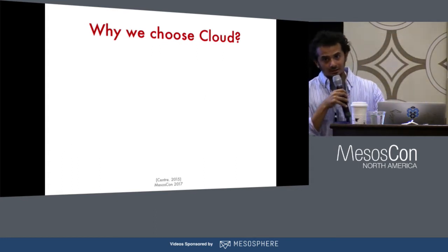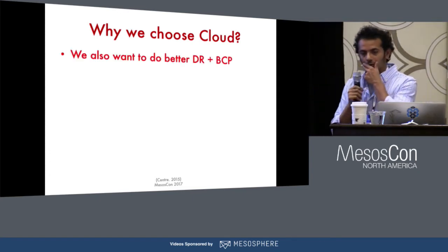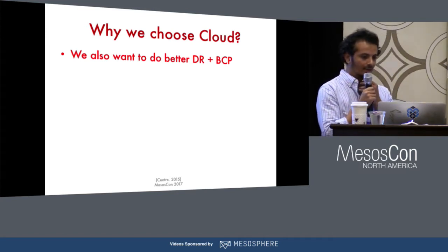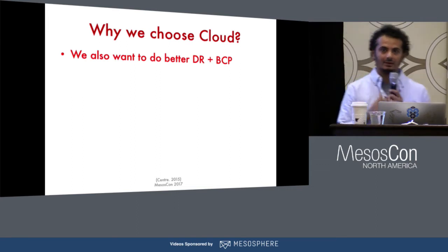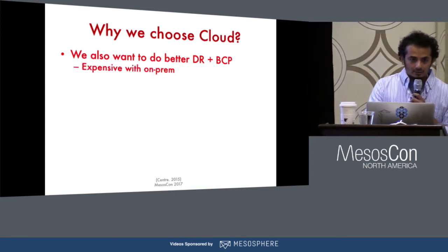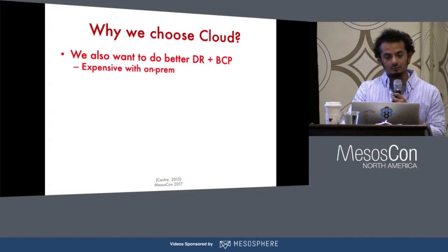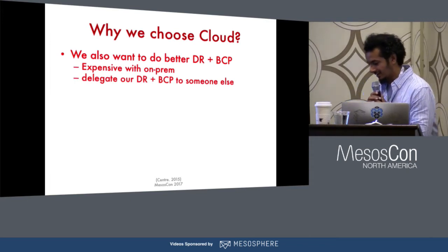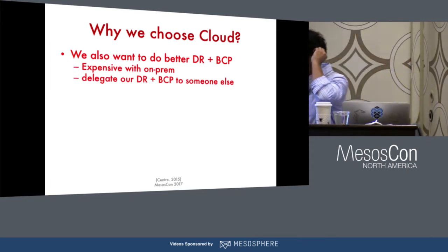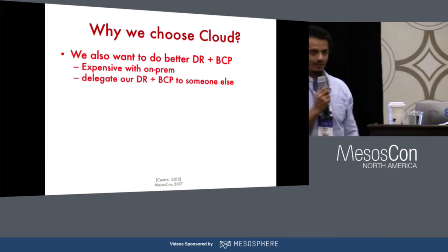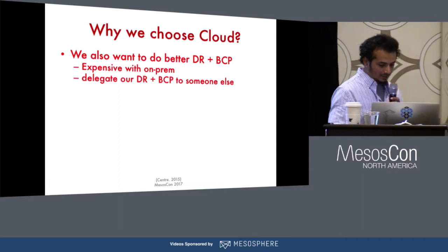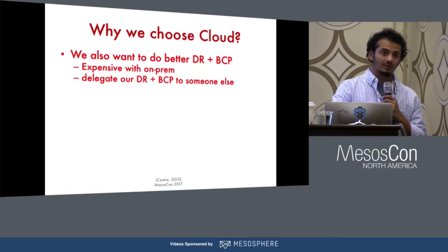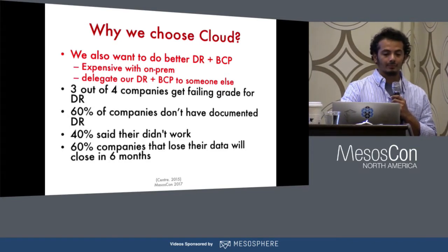One other reason people are looking into the cloud is that they want better DR and BCP planning. DR is disaster recovery. They want better business continuity planning for their applications, because doing DR with on-premise stuff is very expensive. Cloud provides a cheaper alternative, and people want to delegate their DR responsibility to somebody else — if cloud is doing it, let them do it, just pay them. But you might be surprised to hear how many companies are actually doing proper disaster recovery planning. It's very sad, actually.